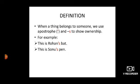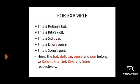Same in the second example, this is Sonu's pen. Sonu has apostrophe S, wherein it shows that the pen belongs to Sonu. Few more examples: this is Rita's doll. This is Sid's car. This is Dia's purse.